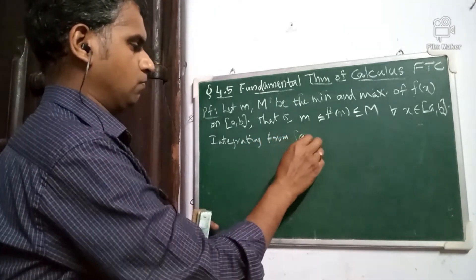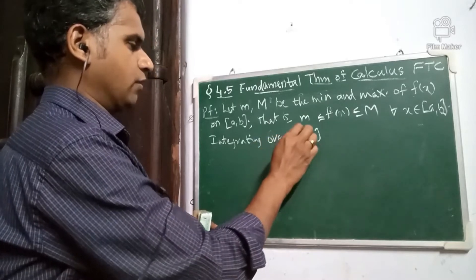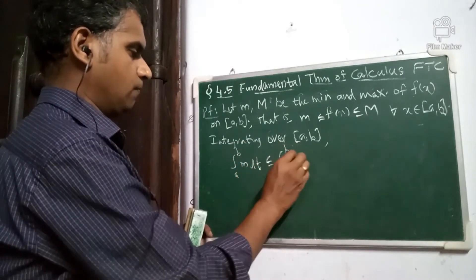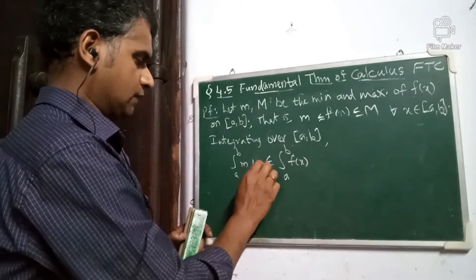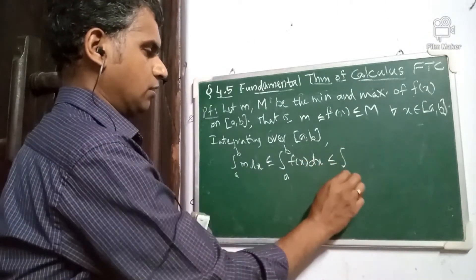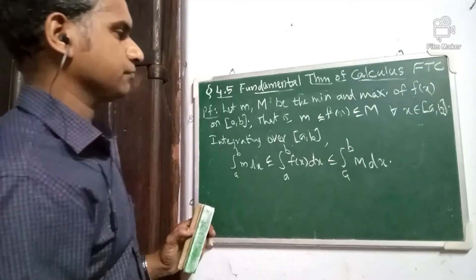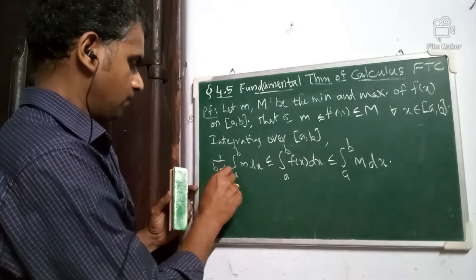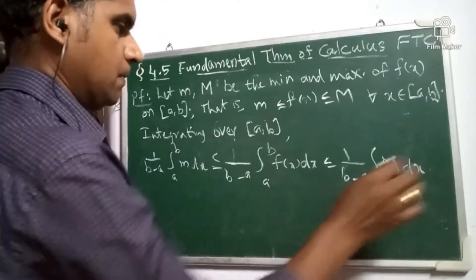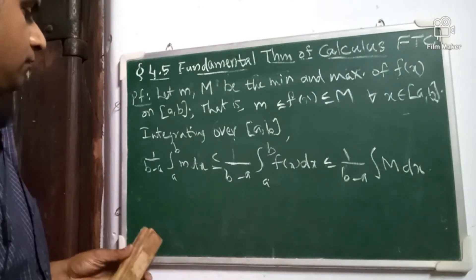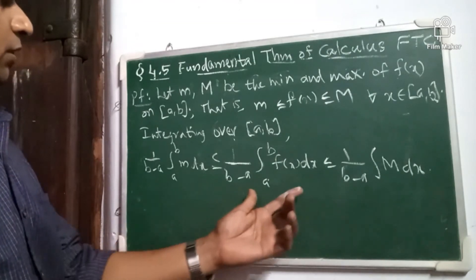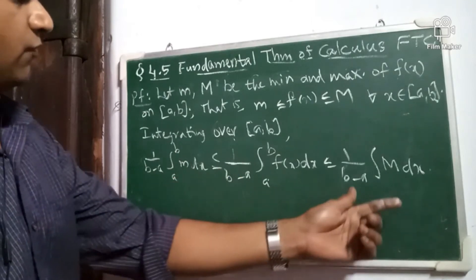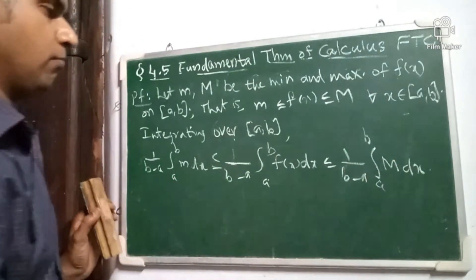Integrating the inequality from a to b: integral from a to b of m dx is less than or equal to integral from a to b of f(x) dx, which is less than or equal to integral from a to b of M dx. Now dividing throughout by (b minus a): 1 over (b minus a) times integral from a to b of m dx is less than or equal to the average of f, which is less than or equal to 1 over (b minus a) times integral from a to b of M dx.